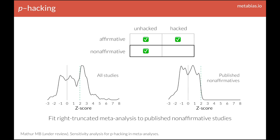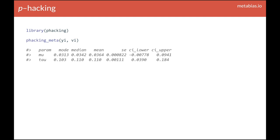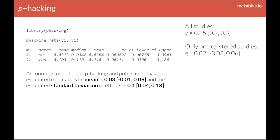You might wonder what if there's less stringent selection and some non-affirmative studies include hacked studies — for example, if some hackers give up before obtaining an affirmative result and publish a non-affirmative result. It turns out that published non-affirmatives from hacked studies are usually downward biased, and so while the right-truncated meta-analysis is misspecified, it will generally be conservative. Using the p-hacking package, it's straightforward to fit this right-truncated meta-analysis. You pass phacking_meta just the estimates and variances, and get estimates of both the mean mu and heterogeneity tau. In this example, the estimate corrected for potential p-hacking is quite close to the estimate among only pre-registered studies — far smaller than the estimate among all studies.